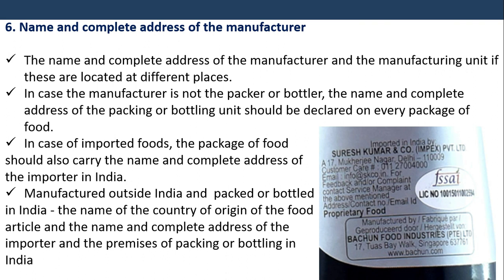The name and complete address of the manufacturer and the manufacturing unit — if these are located at different places — must be declared. If the manufacturer is not the packer or bottler, the name and complete address of the packing or bottling unit should be declared on every package. For imported foods, the package should also carry the name and complete address of the importer in India. For food manufactured outside India and packed or bottled in India, the name of the country of origin and the name and complete address of the importer and the premises of packing or bottling in India must be stated.